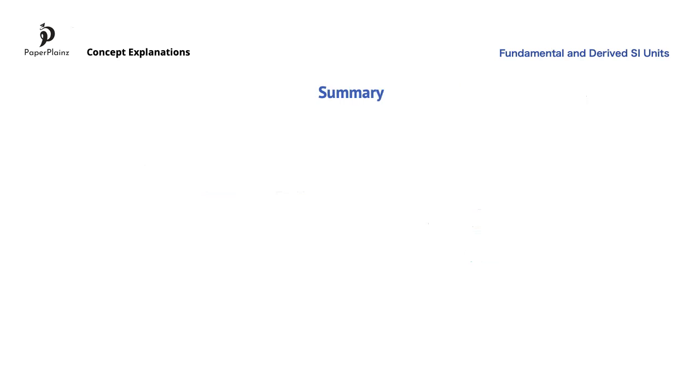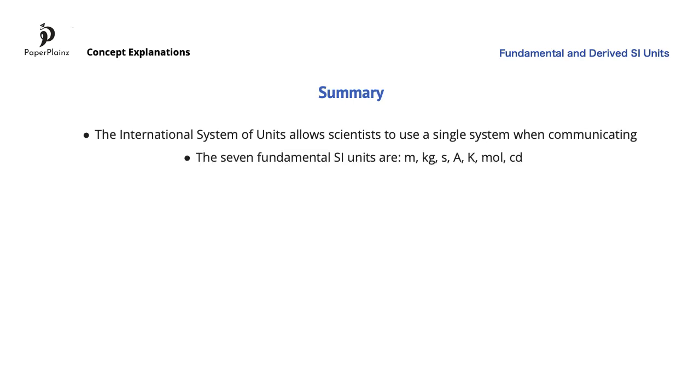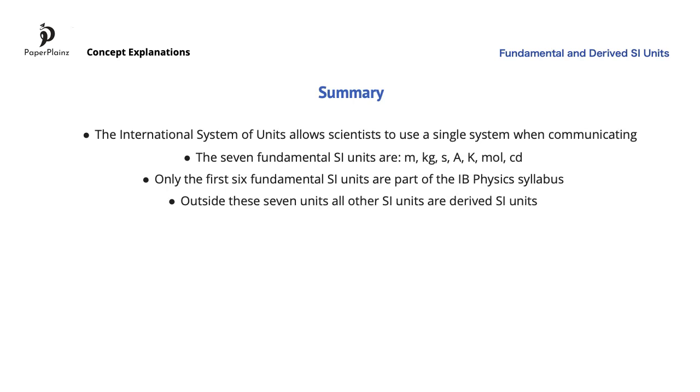Let's summarize what we've covered in this video. We learned a bit about the history of the international system of units, and that it allows scientists to use a single system when communicating. We enlisted the 7 fundamental SI units: meter, kilogram, second, ampere, kelvin, mole, and candela. A reminder that only the first 6 fundamental SI units are part of the IB Physics syllabus. You will not work with the candela in this course. We discussed derived SI units, which are basically all other units outside the 7 fundamental SI units. And finally, through our example, we have seen that derived SI units can be written as a combination of fundamental SI units.